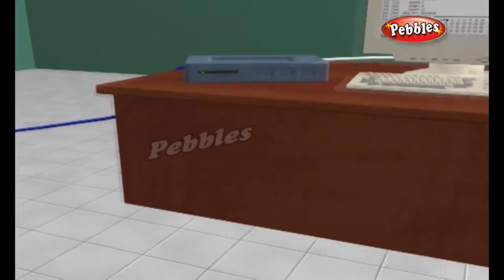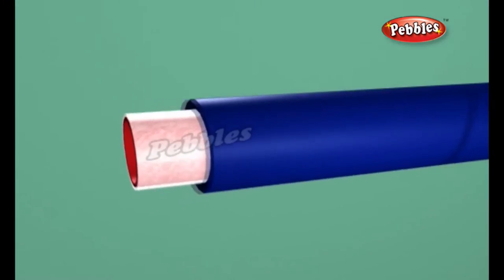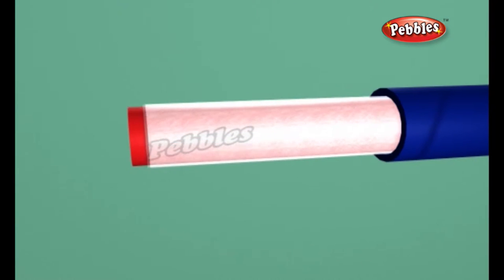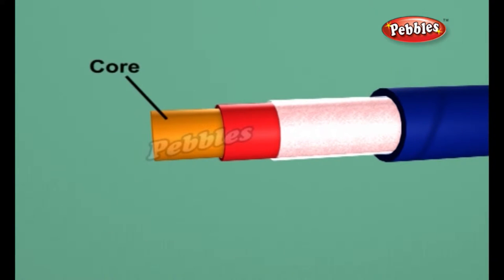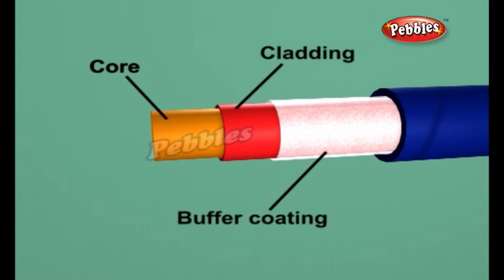If you look closely at a single optical fiber, you will see that it has the following parts. Core: thin glass center of the fiber where the light travels. Cladding: outer optical material surrounding the core that reflects the light back into the core. Buffer coating: plastic coating that protects the fiber from damage and moisture.